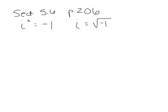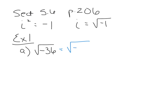Starting with example 1, letter A: what is the square root of negative 36? These are easy to simplify with perfect squares because we know the multiplication rule. Negative 36 is really negative 1 times 36. So the square root of negative 36 is the square root of negative 1 times the square root of 36. The square root of 36 is 6, and the square root of negative 1 is i, so this turns into 6i.